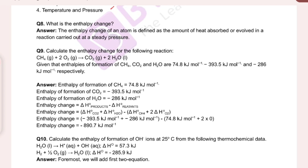Calculate the enthalpy change for the following reaction: methane plus oxygen gives carbon dioxide plus water — this is the combustion of methane. The balanced reaction is CH4 plus 2O2 gives CO2 plus 2H2O. Given the enthalpy of formation values for CH4, CO2, and H2O.